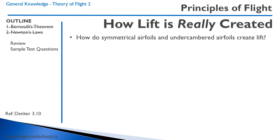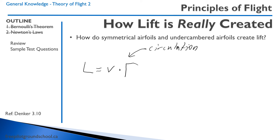Let's say we want to quantify lift. There are a number of different formulas, but this is the Kutta-Joukowski theorem. We write lift L equals the airspeed V times the dot product gamma — that's the circulation we've been talking about. You can look this up on Wikipedia — it involves a vortex line integral; I'm not going to get into the calculus of it.